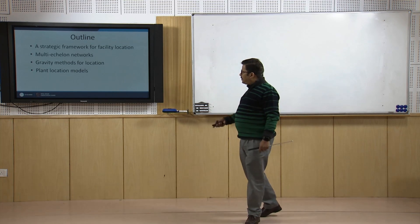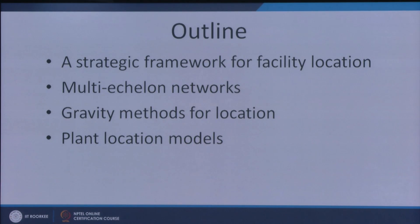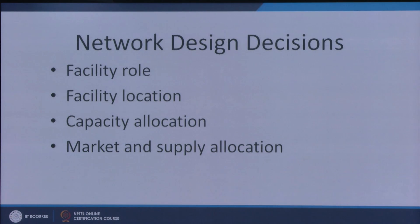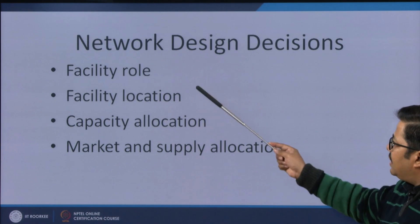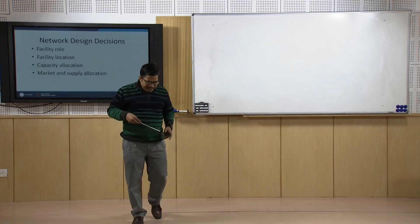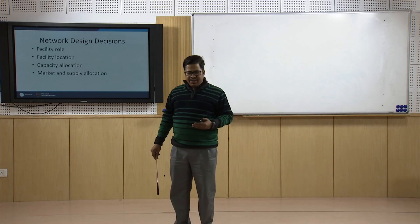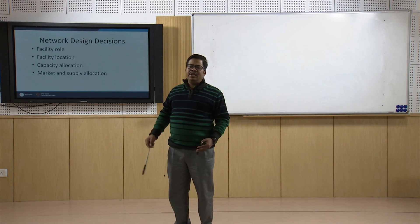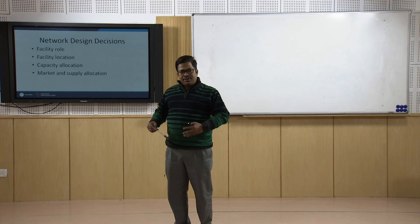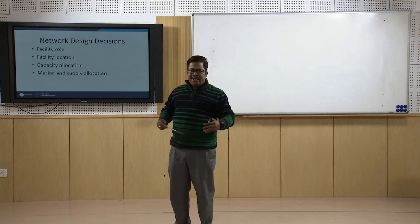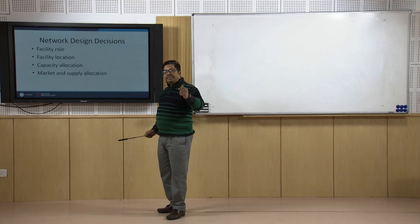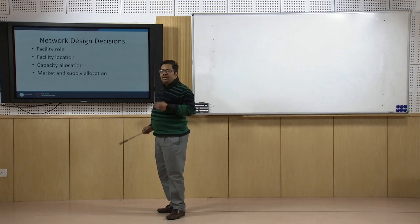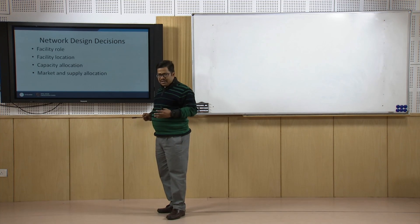These are the important points we are going to discuss in this session. The facility role — that is the first important thing — what will be the role of the facility. Our facility can be a retail facility, a wholesale facility, or a manufacturing facility. These are the different types of roles facilities play in a supply chain. Whenever I am going to have a new facility, I need to be very clear about whether it is manufacturing, retail, or wholesale.